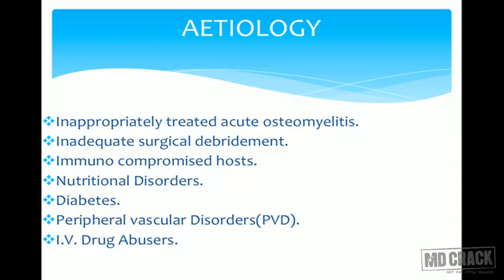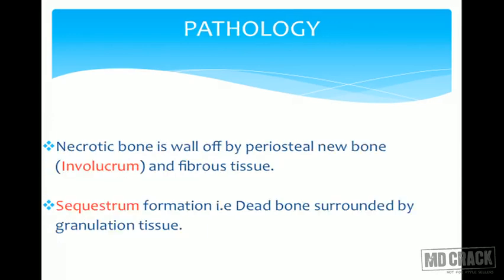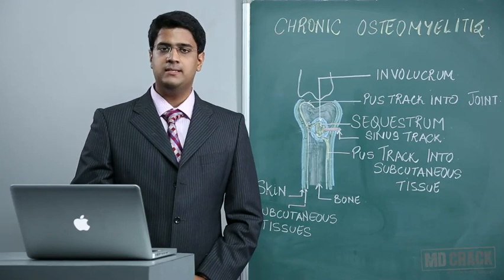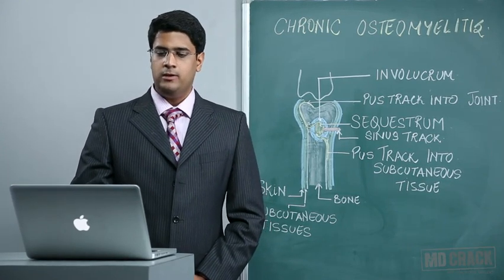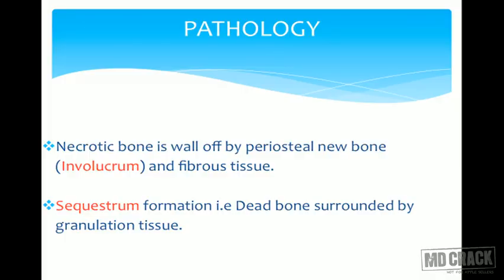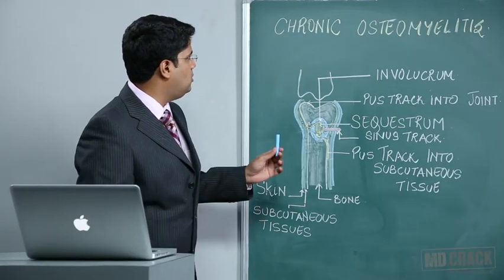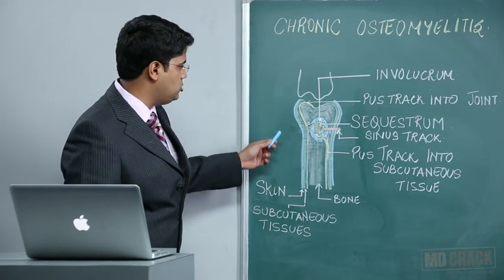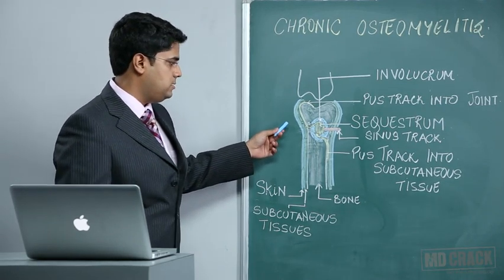The pathology of chronic osteomyelitis involves necrotic bone walled off by periosteal new bone formation, known as the involucrum, and by fibrous tissue. The second feature is sequestrum formation — a dead bone surrounded by granulation tissue. The essence of chronic osteomyelitis lies in these two terminologies: sequestrum and involucrum.